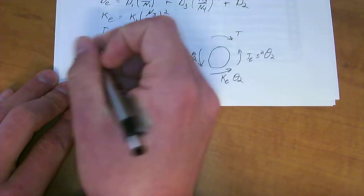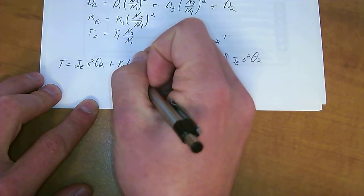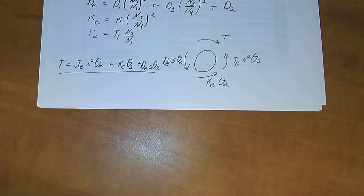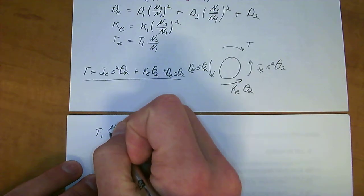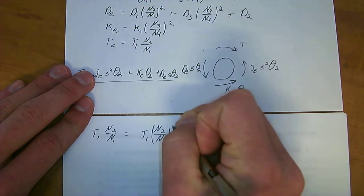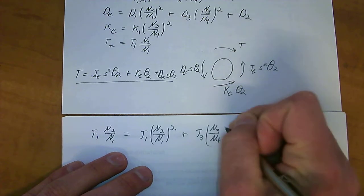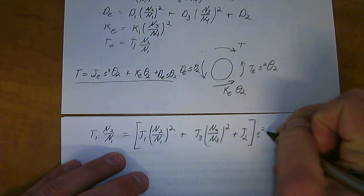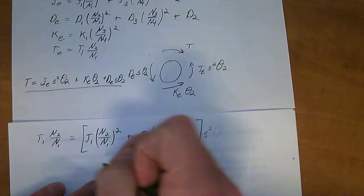And now we have something that we can create an entire equation for. So, if we do it like this, then we have T is equal to J E S squared theta 2, plus K E theta 2 plus D E S theta 2. And that's the equation. Now, taking that equation and actually subbing in all the mass that we have up here, we've got T1 N2 all over N1 is equal to J1 N2 over N1 squared plus J3 N3 over N4 squared plus J2. All of this in parentheses times S squared.